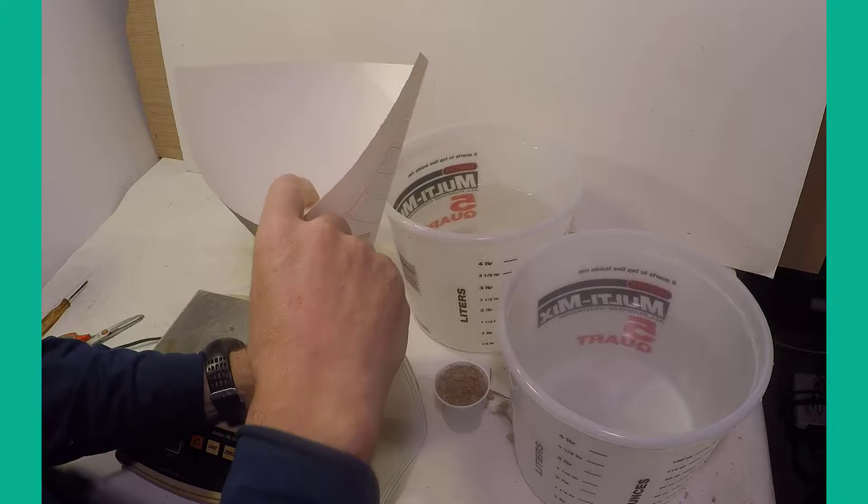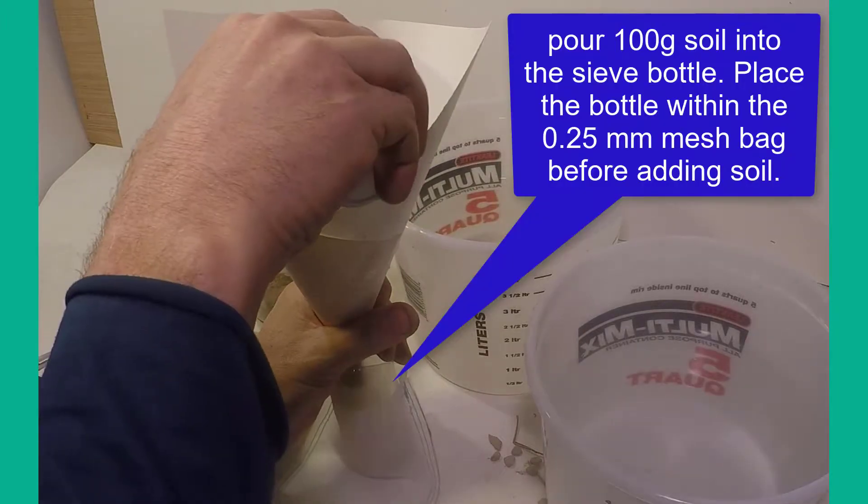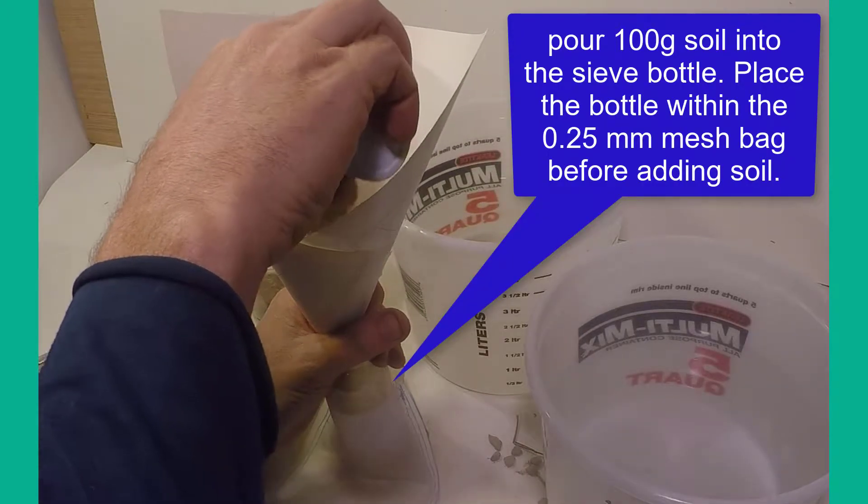Next, the 100-gram soil is poured into the sieve bottle, with the sieve bottle already inserted into the bag.